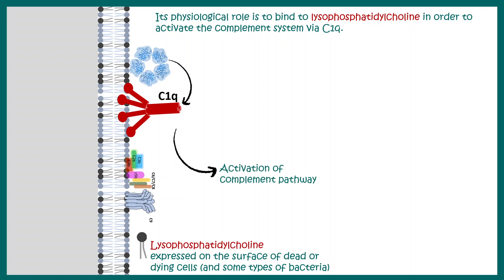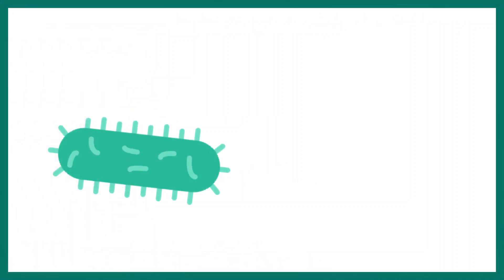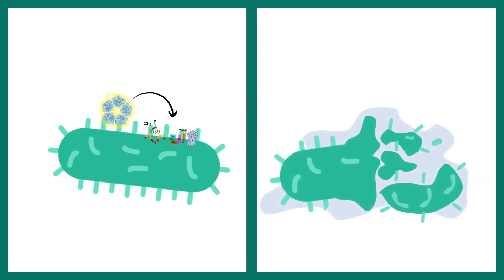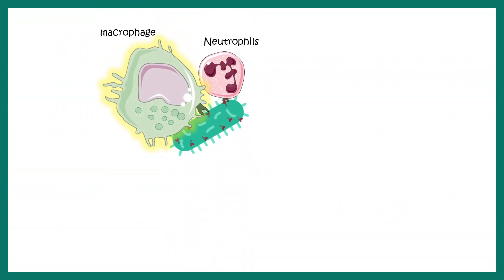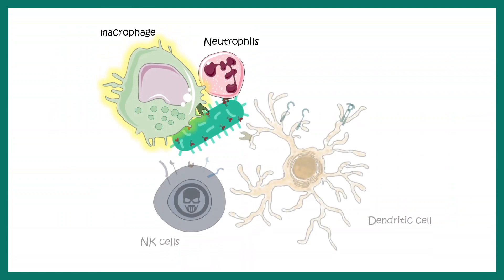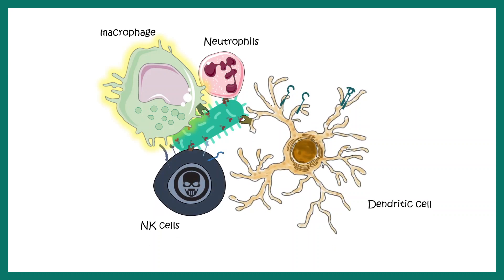From an inflammation or infection point of view, this is really important. For example, if there is a bacteria, C-reactive protein can lead to complement fixation on the bacteria and thereby lysis or destruction of that bacteria — it's a protective mechanism. Additionally, several cell types such as neutrophils, macrophages, NK cells, and dendritic cells all have complement receptors, so whenever there is complement opsonization on the bacteria, these cells engage with and engulf it, neutralizing the threat and reducing the infection.